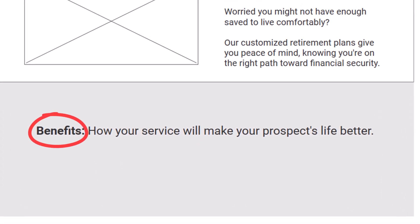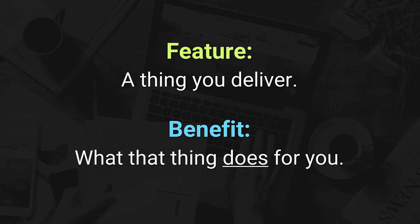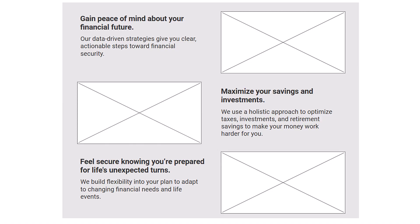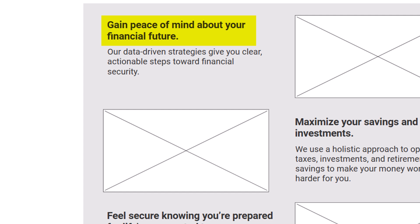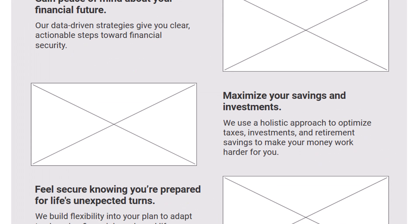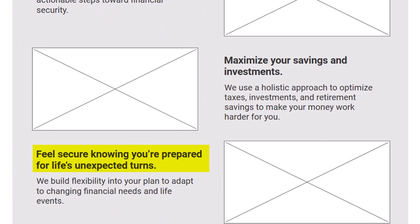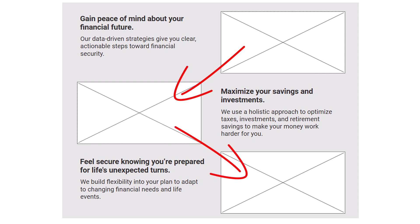The next section is the benefits section, showing how your service will make your prospect's life better. Pick three or four benefits your service provides, coupled with the feature that makes that benefit possible. Remember: a feature is a thing you deliver, and a benefit is what that thing does for you. I also like to pair each benefit with an image that amplifies it. Using our financial planner example: benefit one — gain peace of mind about your financial future, with the feature being 'our data-driven strategies give you clear, actionable steps towards financial security.' Benefit two — maximize your savings and investments. Benefit three — feel secure knowing you're prepared for life's unexpected turns. I often use a zigzag pattern to break up the monotony and make things more visually appealing.